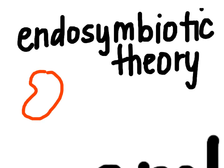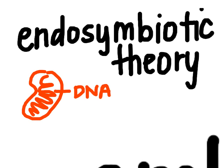This is group one of your evolution vocabulary words, and we're starting out with endosymbiotic theory. The endosymbiotic theory started when we realized that organelles like mitochondria — which are kind of shaped like a bean with layers inside — actually have their own DNA, RNA, and ribosomes.